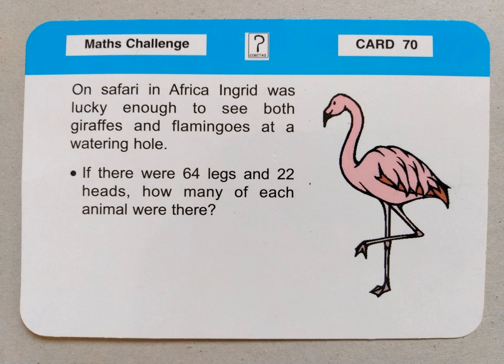A strategy I would suggest: write down your two times table first — 2, 4, 6, 8, 10, and so on, as far as you think you need to go — and think of each of those as a flamingo. Two is one flamingo, four is two flamingos, six is three flamingos, and so on. Then write down your four times table — 4, 8, 12, etc. — and each one of those represents a giraffe. You're looking for combinations of numbers from the two times and the four times table that when added together give you 64, accounting for the quantity of legs. Then double-check: has that given you 22 individual animals — 22 heads? That's the strategy I'd suggest for this one.